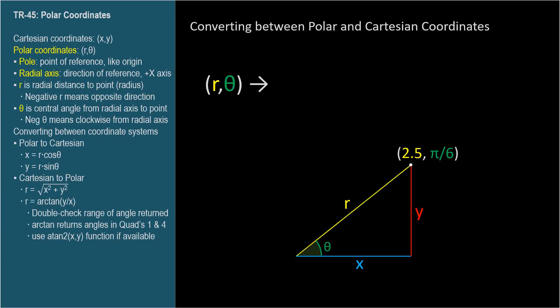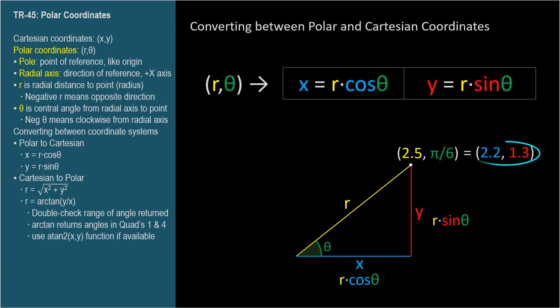Since the hypotenuse is r, this side corresponding to the x coordinate is r·cos(θ), and this side corresponding to the y coordinate is r·sin(θ). You should either memorize these formulas or see the triangle and be able to figure them out. If you're interested in checking your work, the equivalent Cartesian coordinates are (2.2, 1.3), rounded to two significant figures.